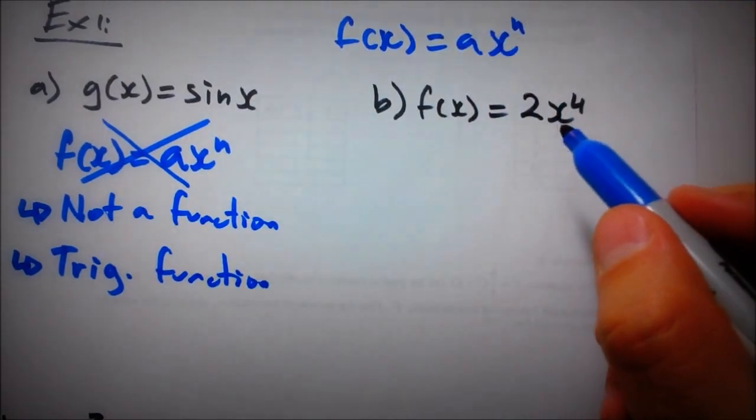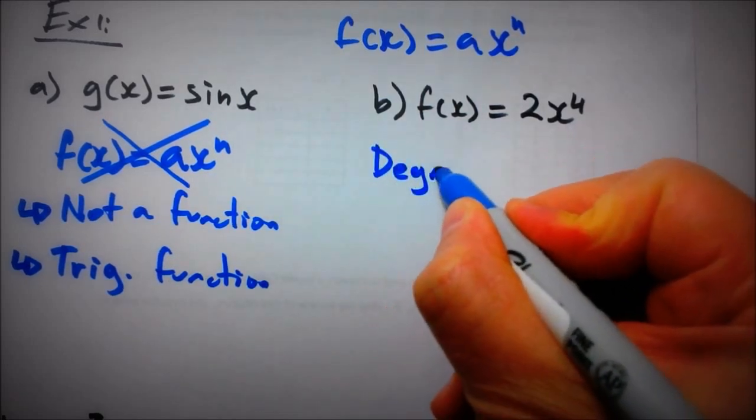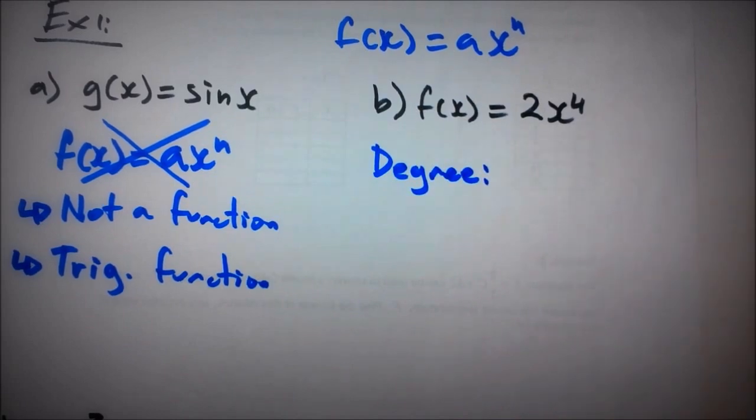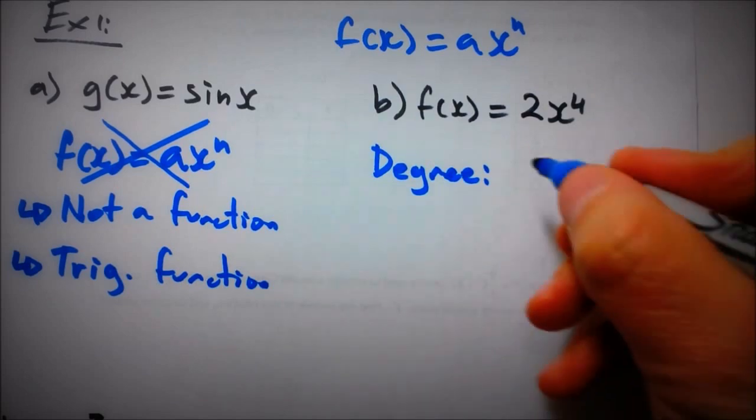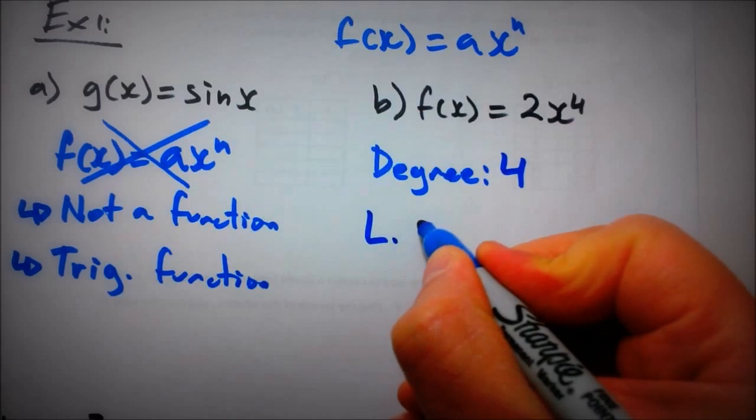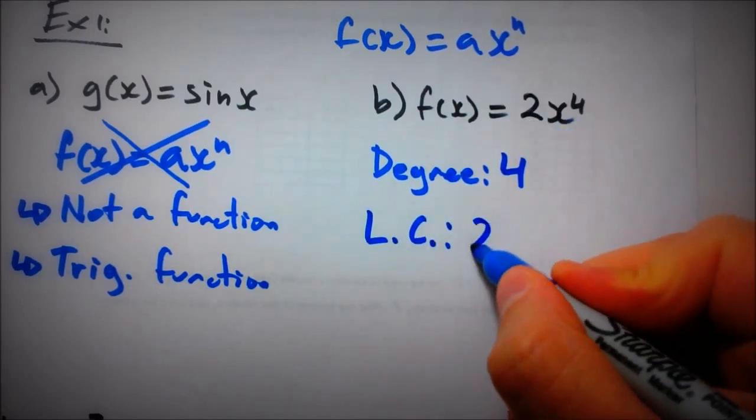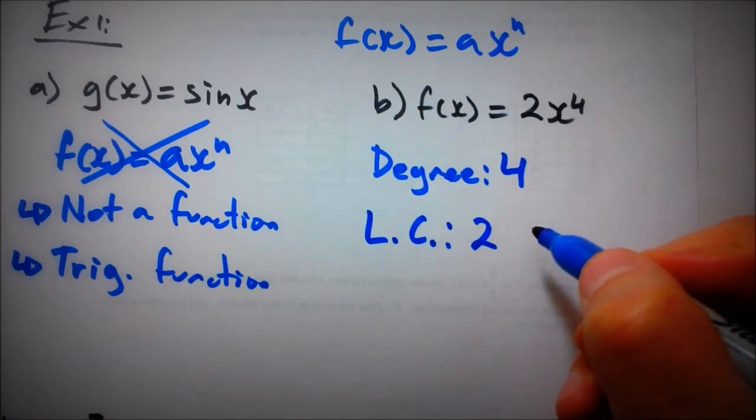So let's start answering those questions. It says state the degree of the function. Okay, so the degree of this function is 4, so let's write down 4 here. What is the leading coefficient? Let me just write down LC to indicate the leading coefficient. Well, the leading coefficient here is 2, quite obvious. And that is all what they're asking us for.